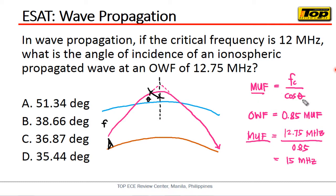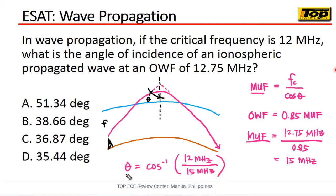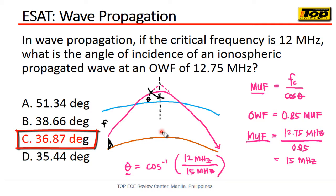Now that we have the MUF, we can easily get theta. Theta is simply the arc cosine of FC over MUF. Our FC is 12 MHz, divided by our MUF of 15 MHz. Computing theta, the answer is letter C: 36.87 degrees. That is our theta, the angle of incidence.